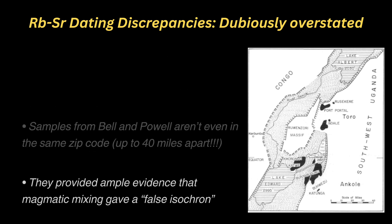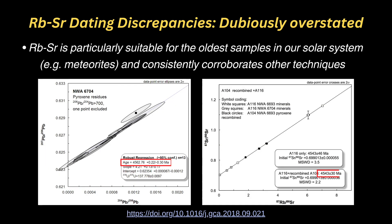In reality, rubidium-strontium isochron dating remains a robust technique that consistently yields similar ages to other methods, especially when we examine the oldest materials of our planet and solar system. So be cautious when you read claims about false isochron results, and don't be duped like Matt.